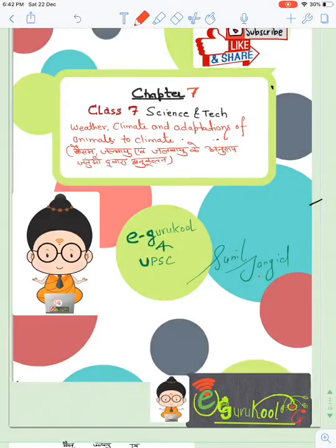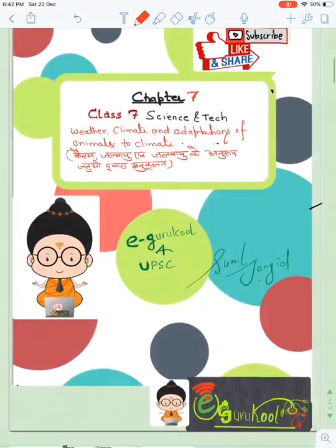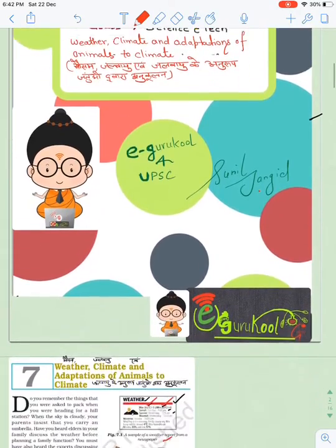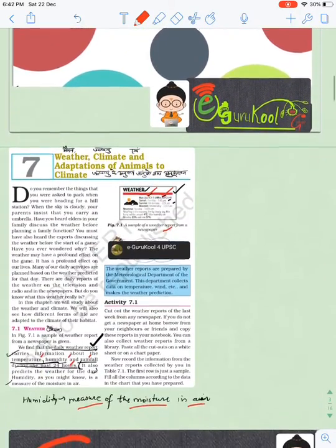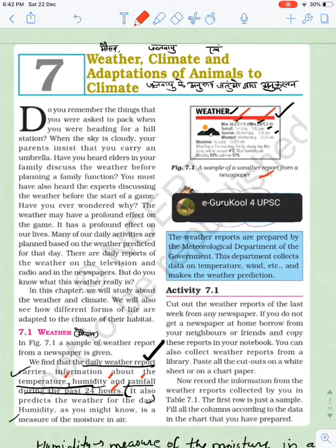Chapter name is Weather, Climate and Adaptations of Animals to Climate. In Hindi: Mausam, Jalvayu aur Jalvayu ke Anurup Jantuon dwara Anukulan. The lecture will be in both Hindi and English for Hindi medium aspirants also.